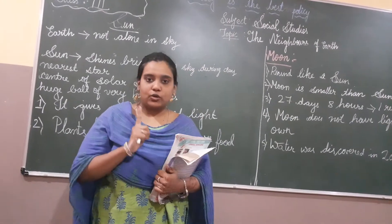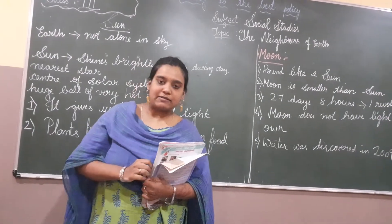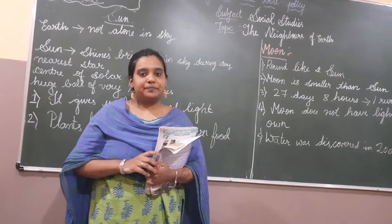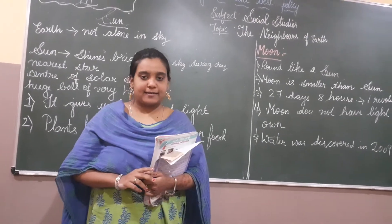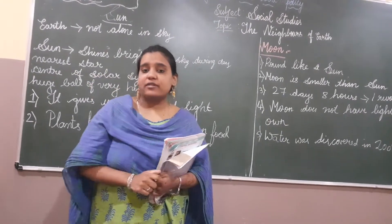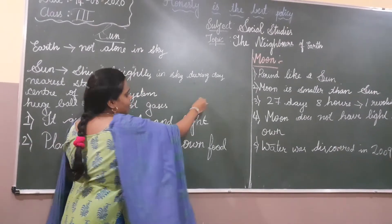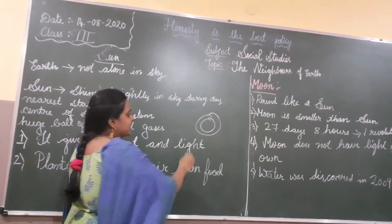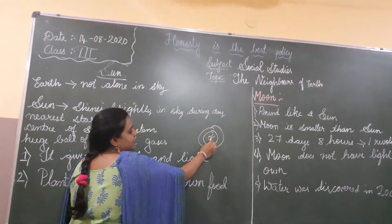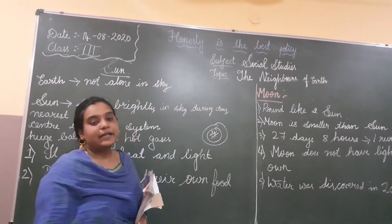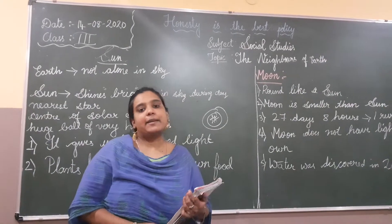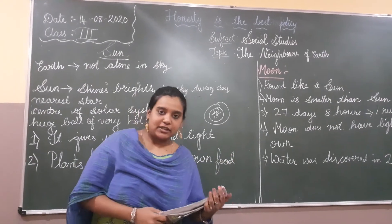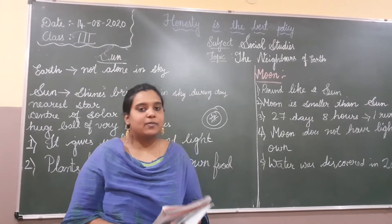Our earth is not alone. We have heard about the solar system. How many planets are there in our solar system? There are eight planets. The planets are revolving around the sun, which is the center of the solar system. First, we are going to study about the sun.